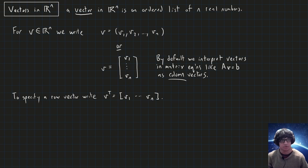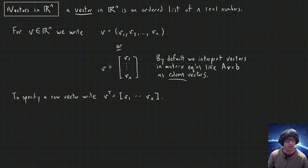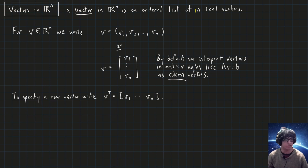Hi and welcome to our first lecture in MATH2LA3. In this lecture we'll talk about vectors, which are the primary object of study in linear algebra. This course will be mostly concerned with vectors in Rn. A vector in Rn is an ordered list of n many real numbers.